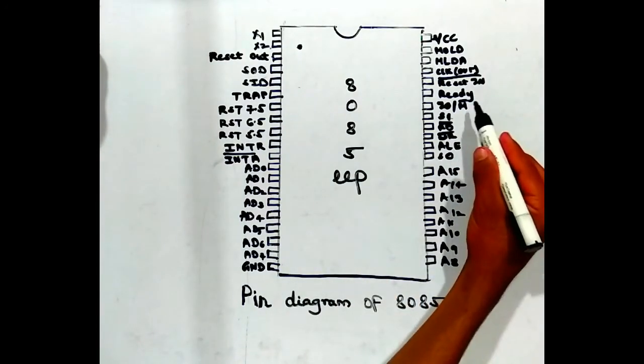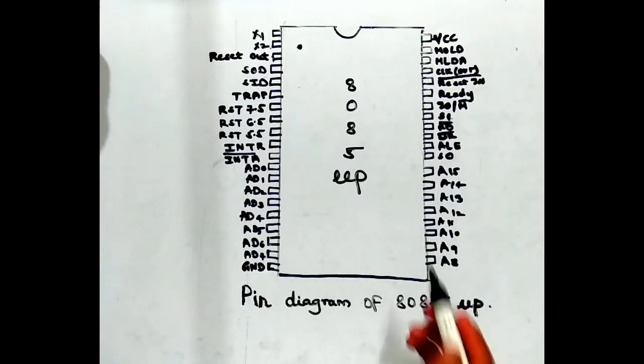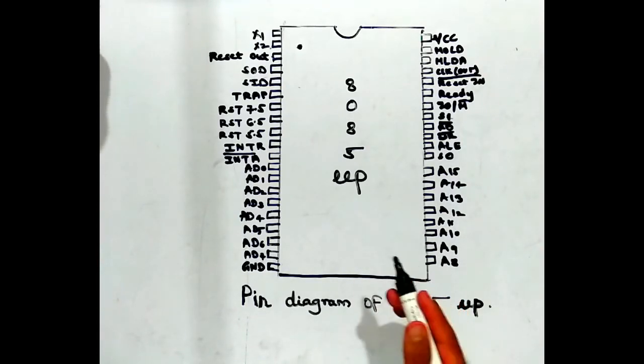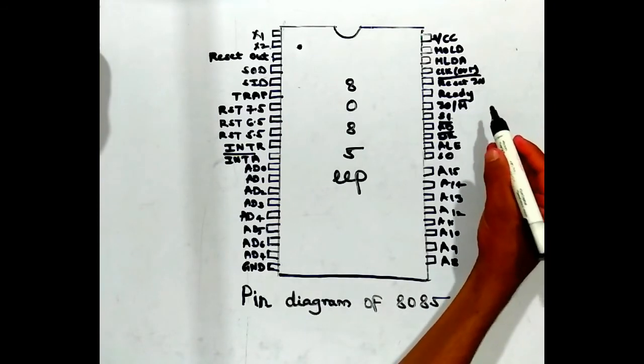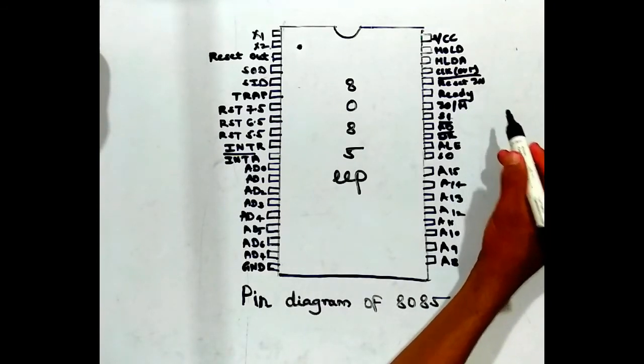The 35th pin is ready. It is used to check whether a peripheral is ready for data transfer or not. The 36th pin is reset in bar, which is used to reset the microprocessor.